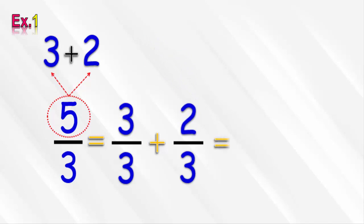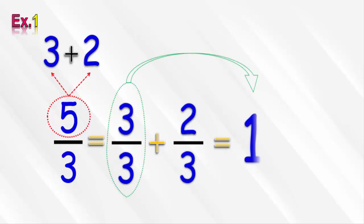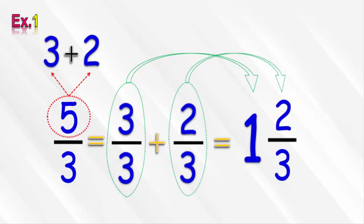The last step is writing the fraction 3 over 3 in the form of the whole number 1, and writing the fraction 2 over 3 beside it. So the equivalent mixed number is 1 and 2 over 3.